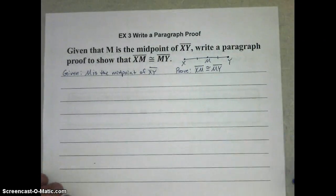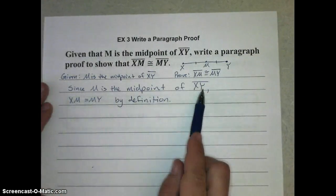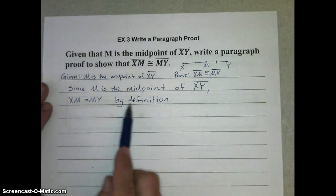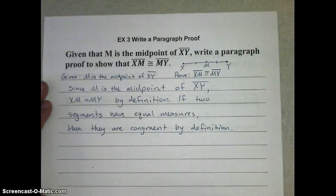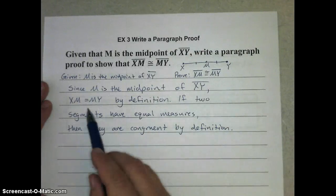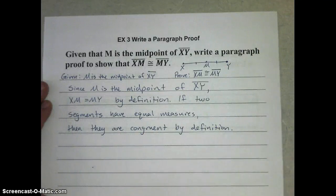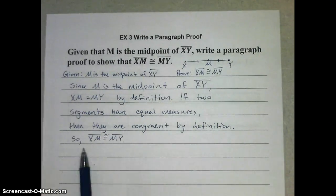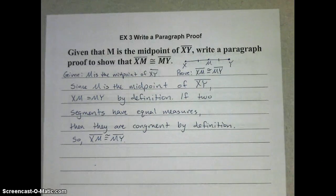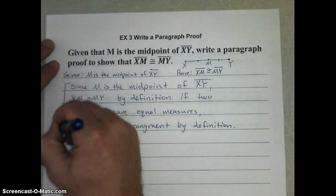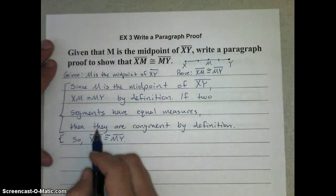So here's how we're going to put that in paragraph form. Our first sentence can read like this. Since M is the midpoint of XY, XM equals MY by definition. And since we know that these are equal, if two segments have equal measures, then they are congruent by definition. So XM is congruent to MY. And I've already given my reason before that. And so this is the body of the proof. And then we have finally proven what we set out to prove in that final statement. But it all fits nicely in one paragraph.